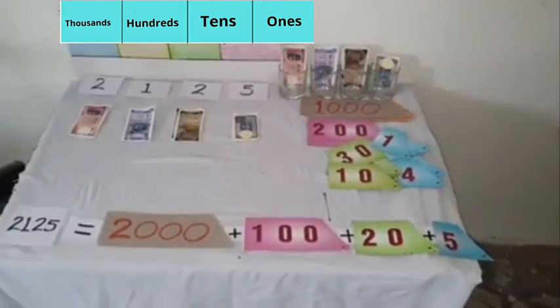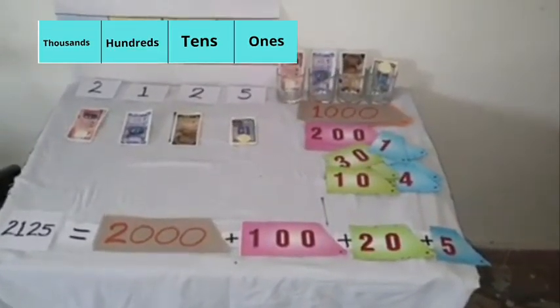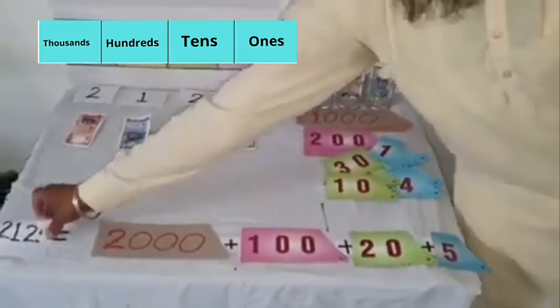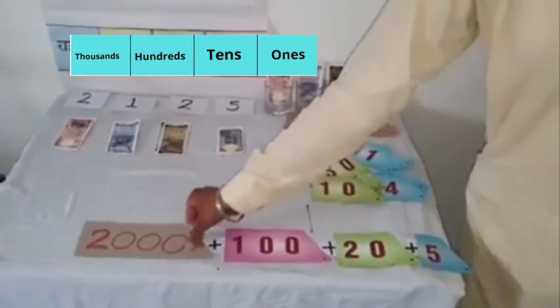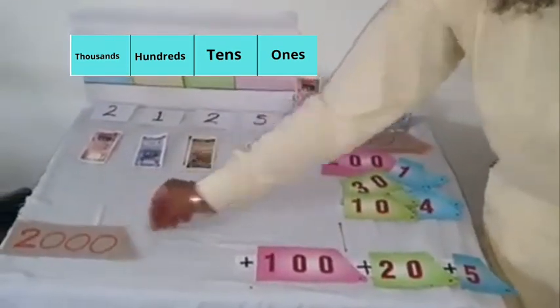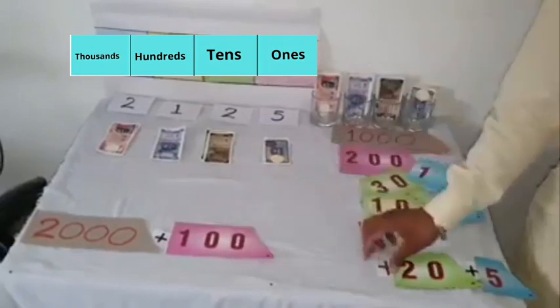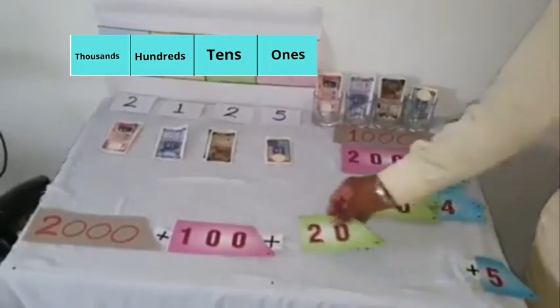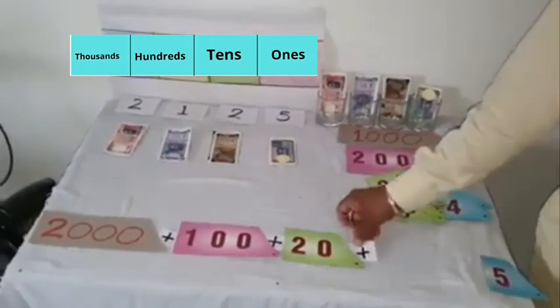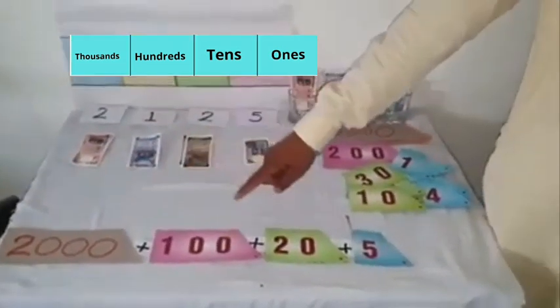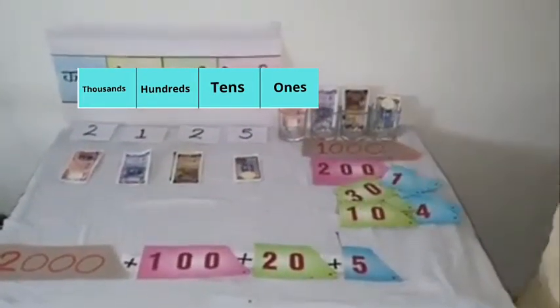Look kids, when the number is not given and its expanded form is given, we can make the number ourselves. Let's do it. 2,000 plus 100 plus 20 plus 5. We have 2,000 plus 100 plus 20 plus 5. Together, they make, yes, 2,125.